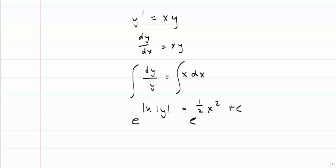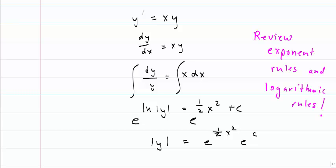If I do that, e to the natural log of y is simply y. And I can rewrite the right-hand side as this using exponent rules. This is where I'm going to warn you that you're going to have to review exponent rules and logarithmic rules. The rule that I've used here is x^(a+b) = x^a times x^b.